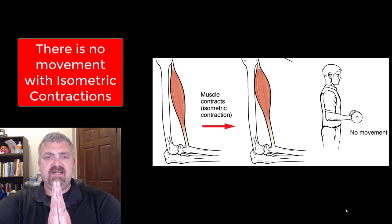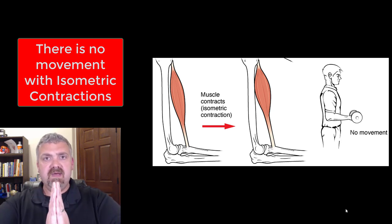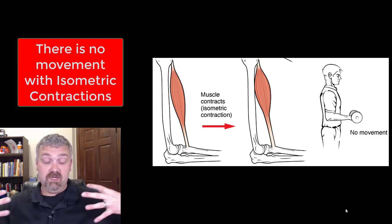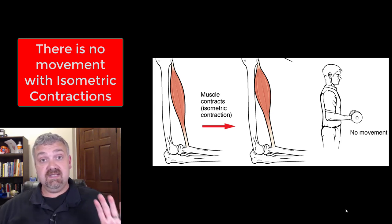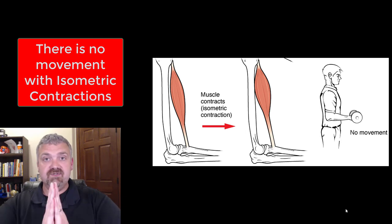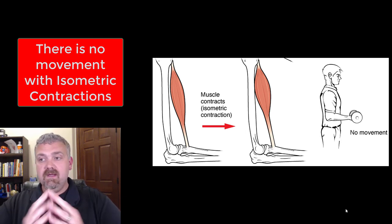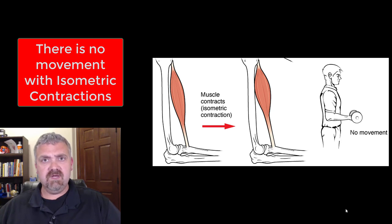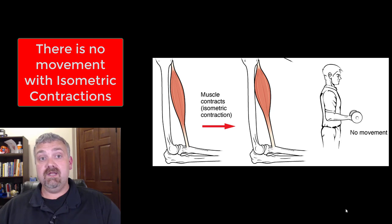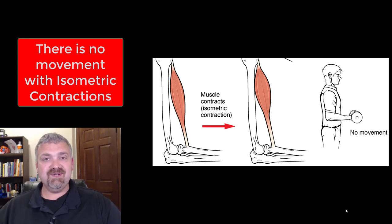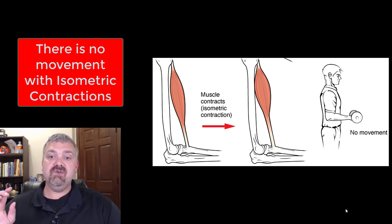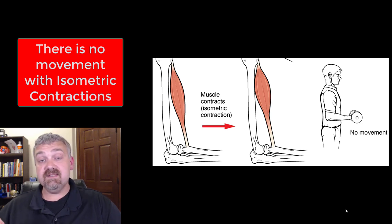If I take my hands and press them together here, this is an isometric contraction. I'm contracting the same muscles in my chest and arms as if I was doing a pushup, but since there's no movement, it's an isometric contraction. Generally think of your postural muscles and how much muscle contraction it takes to sit or stand still. For most people, unless you're very physically active, isometric contractions would be the most common type, especially if you were standing a lot. A muscle contracts but does not change in length, so there is no movement.